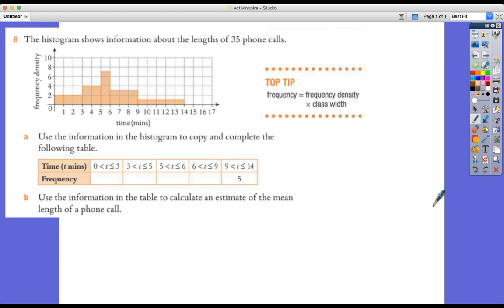Hello and welcome to a short tutorial on how to solve what we might call a backwards histogram question. This is where we're not creating the histogram, we're actually given the histogram at the beginning of the question and asked to extract from it data to answer the questions that are there.